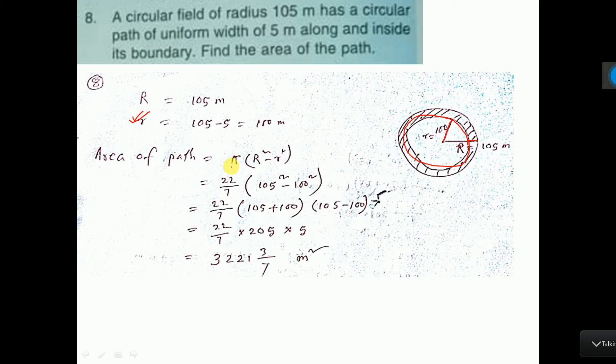Now pi, value of pi is 22 by 7, and capital R square and small r square. You put the value: capital R square is 105 square minus small r is 100 meter square.